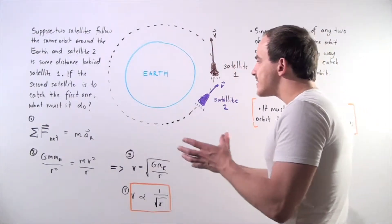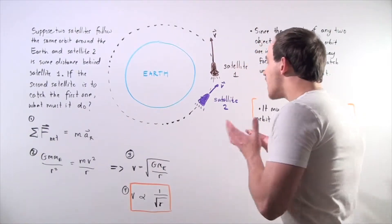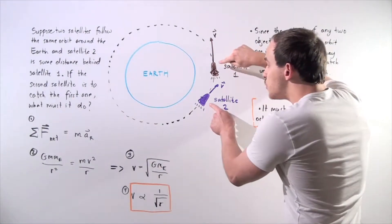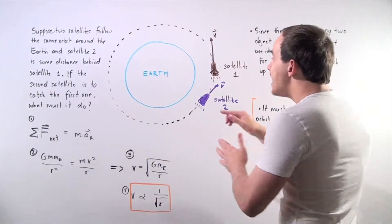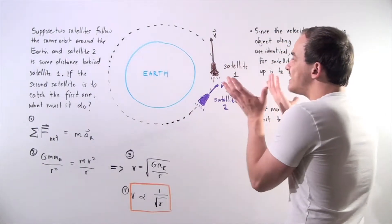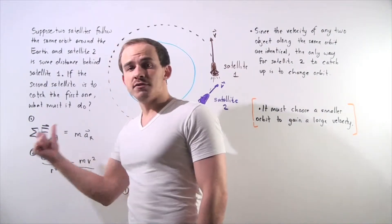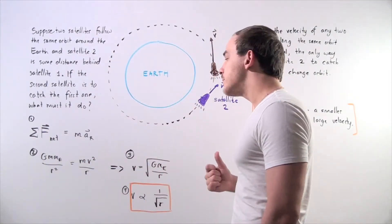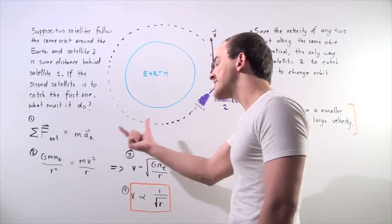Let's begin by discussing the net force that acts on our satellites. Because these two satellites have the same exact mass and they're following the same orbit, the net force will be exactly the same. The net force acting on either object is equal to the mass of that object multiplied by its radial or centripetal acceleration.